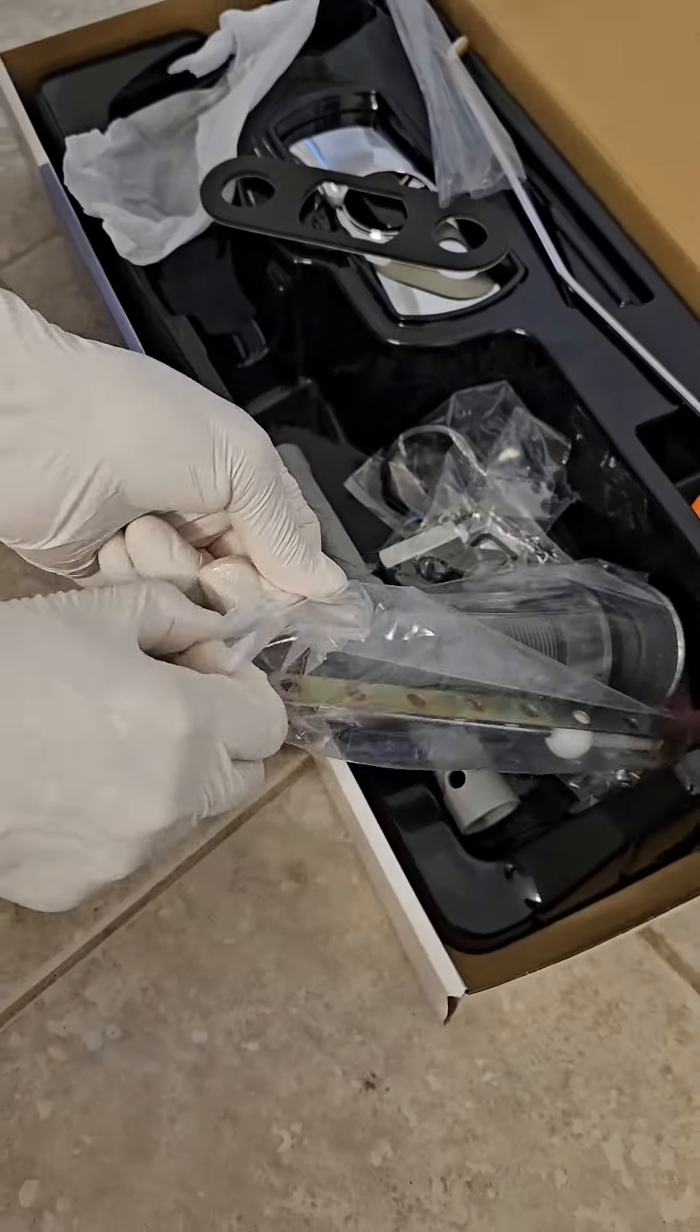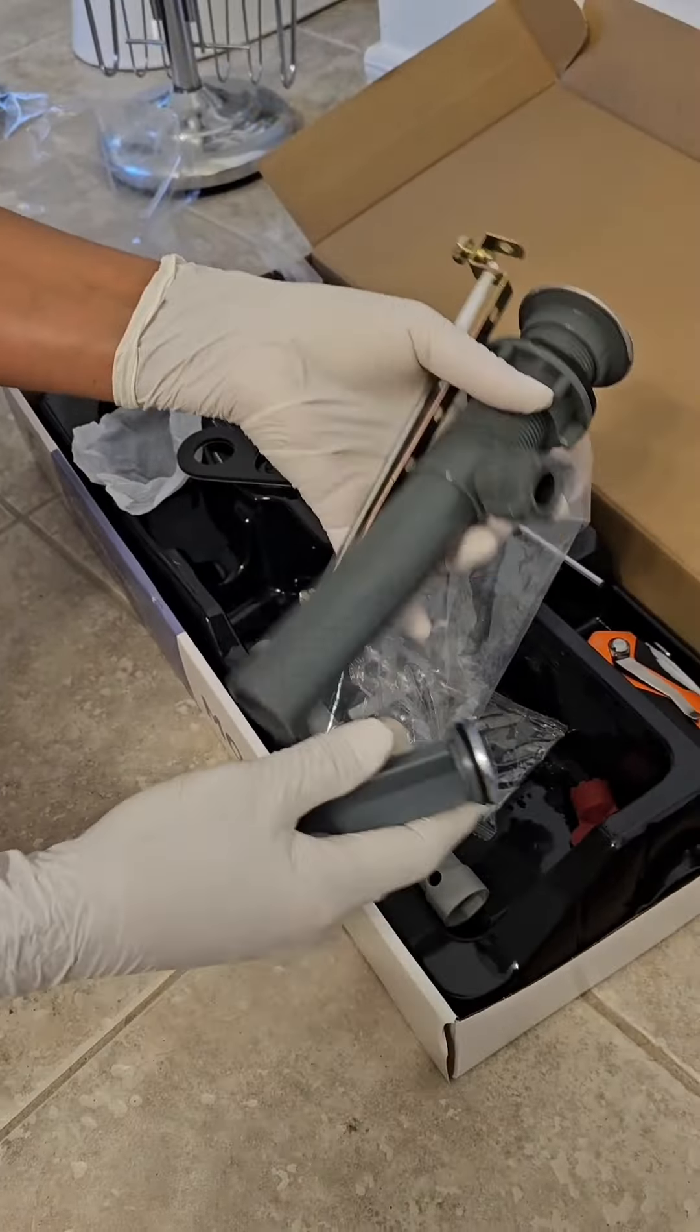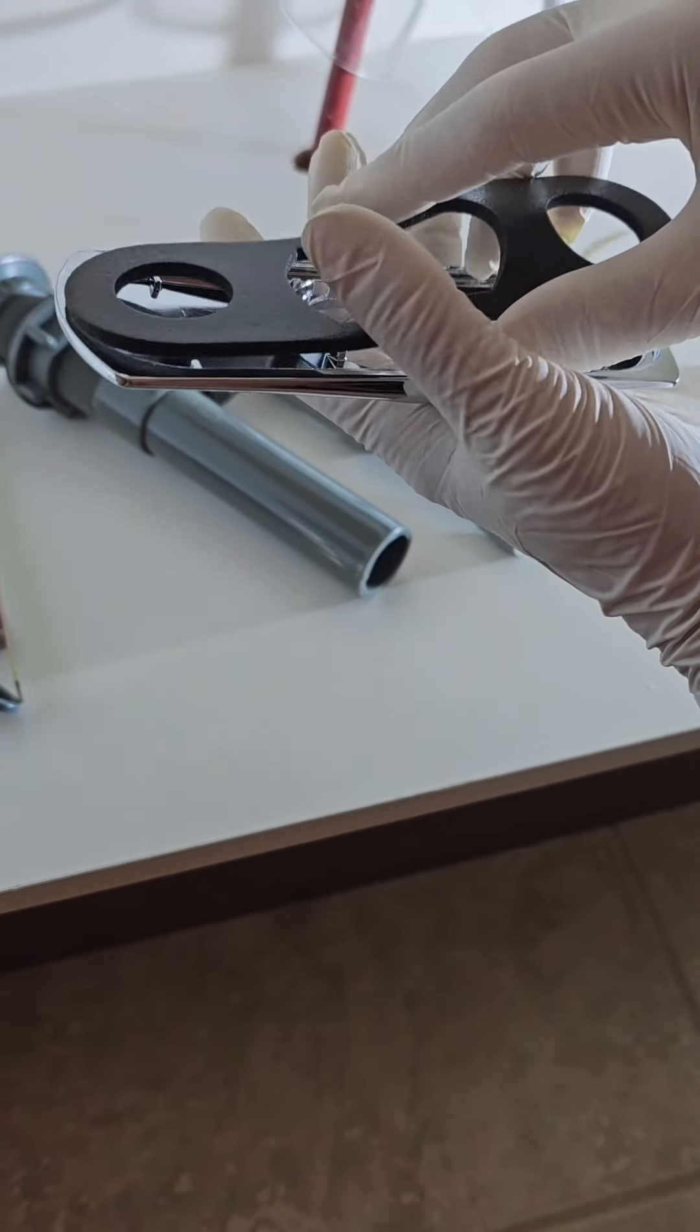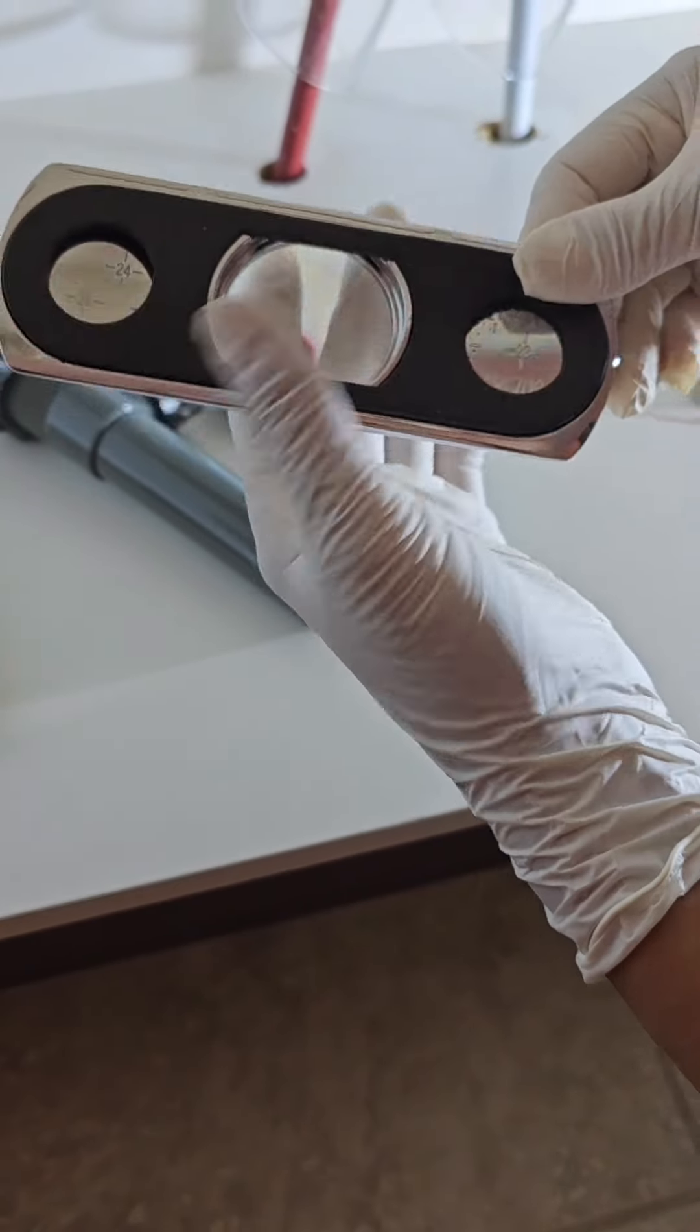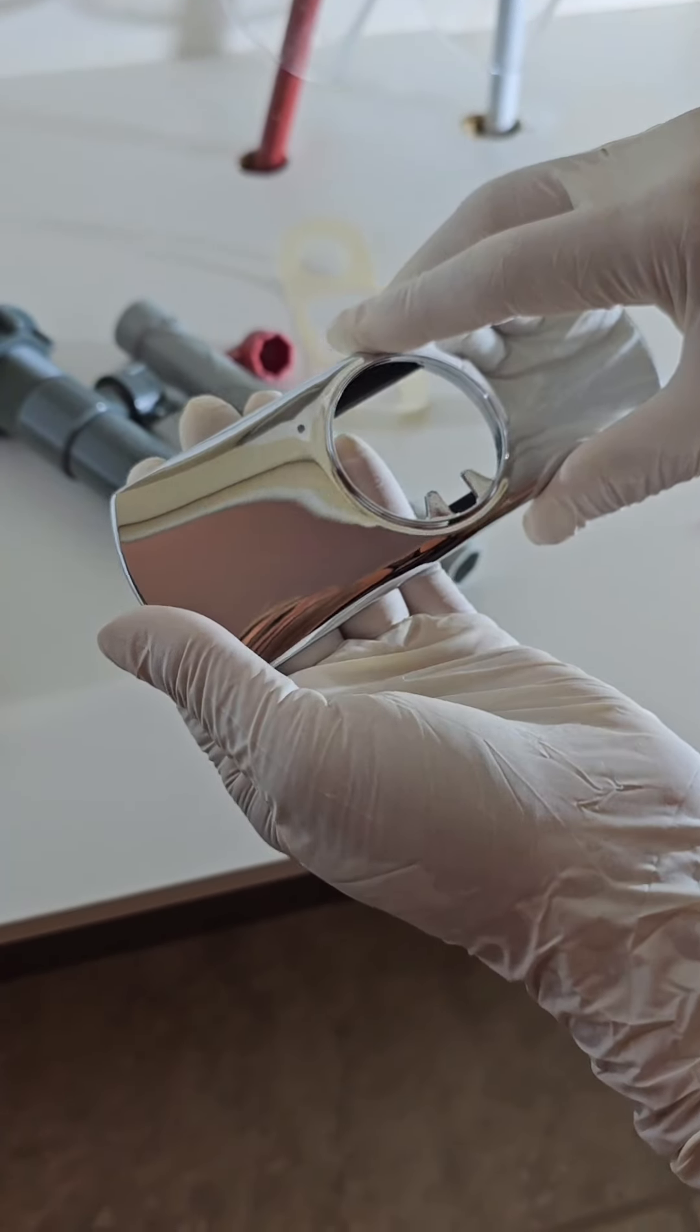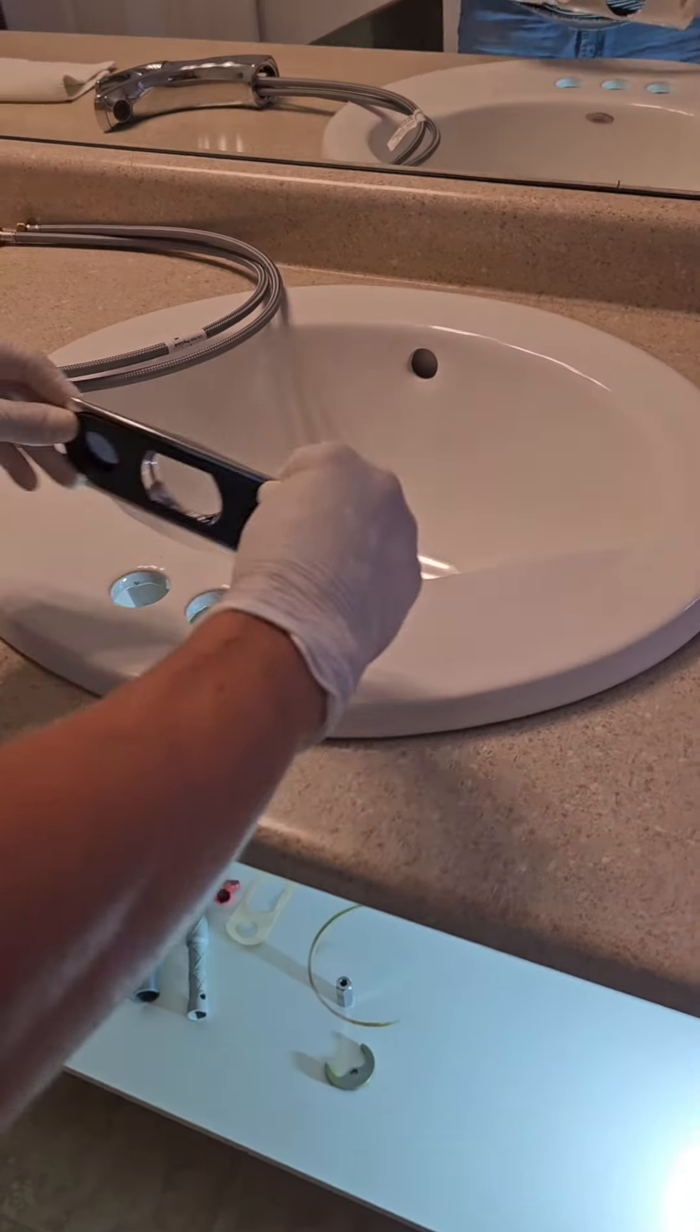It's best to install the faucet before placing the sink. Otherwise, you'll end up having to screw everything underneath the sink, which is a headache. As you can see, I put the sink in backwards to make installing the faucet easier.